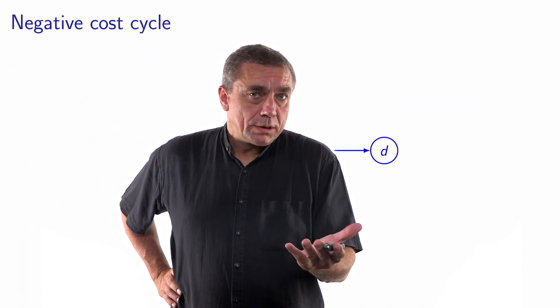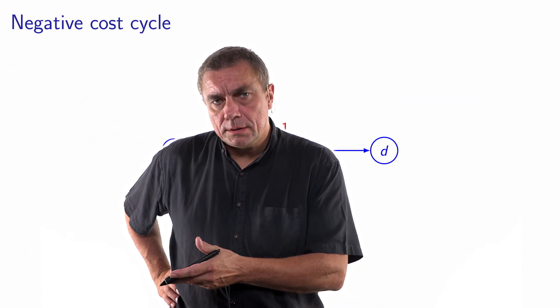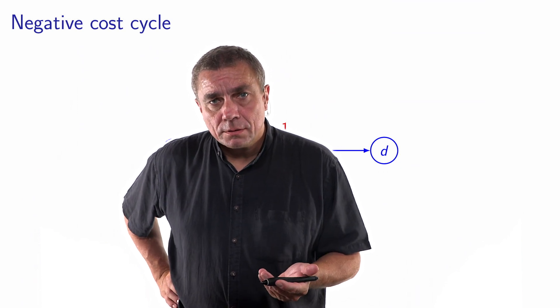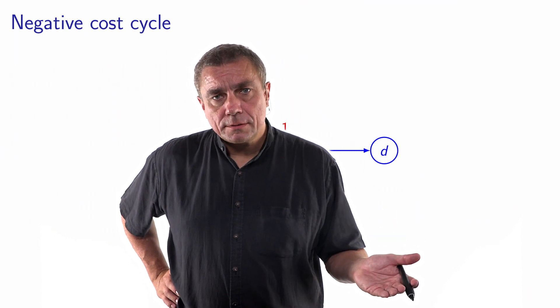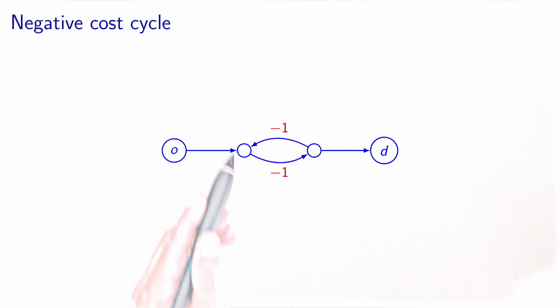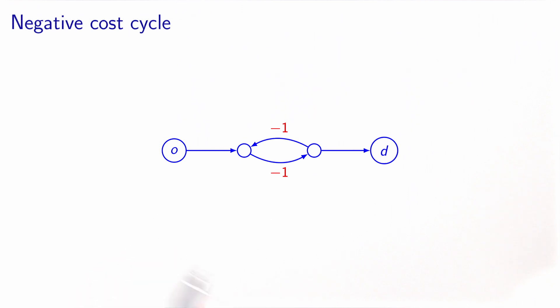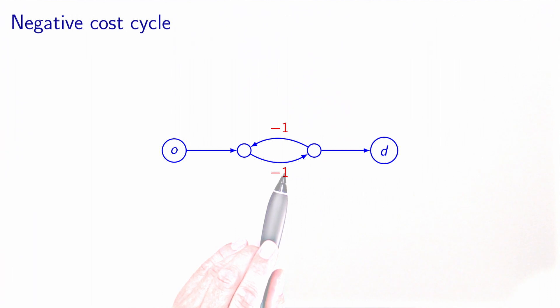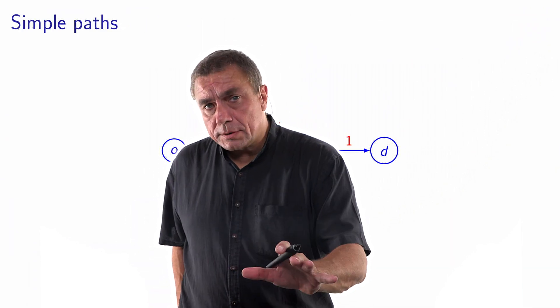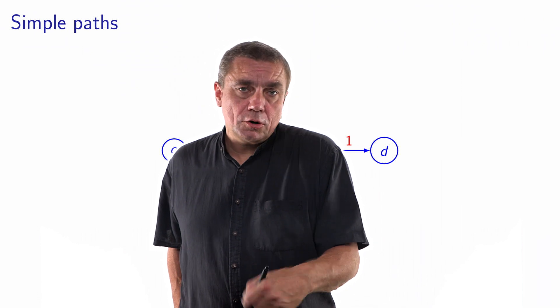The shortest path problem is not always well defined. In particular, if there exists a path between O and D that contains a cycle with negative cost, then there is no finite path that is the shortest path. If you have a cycle of cost minus 2 in a path between O and D, then given any path from O to D, you can always find a shorter one by making as many tours around the negative cycle as needed. The problem is unbounded and there is no shortest path. We now assume that the network does not contain any cycle with negative cost — so if there is a cycle, it has a non-negative cost. Under this assumption, we can always find a shortest path that is a simple path, meaning one that does not contain a cycle.